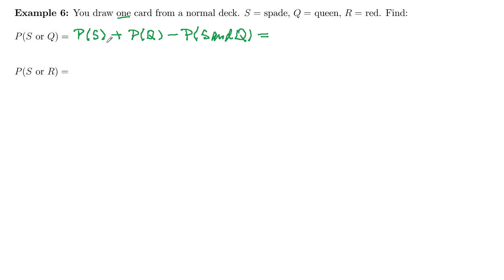So spades, there are 13 spades out of 52 cards, desired out of total, equally likely sample space. Plus queens, probability of queen, there are 4 queens out of 52.